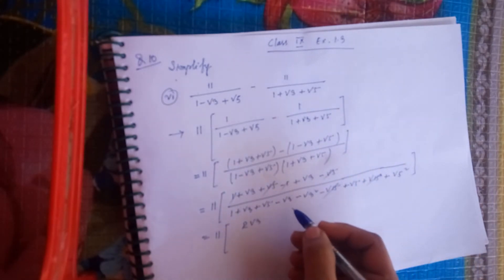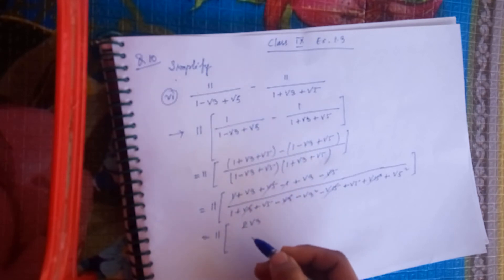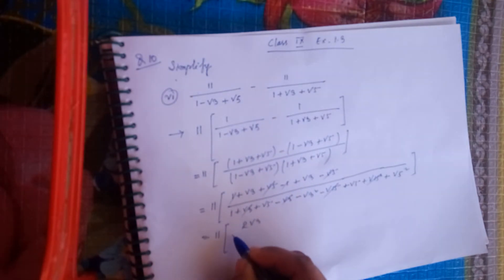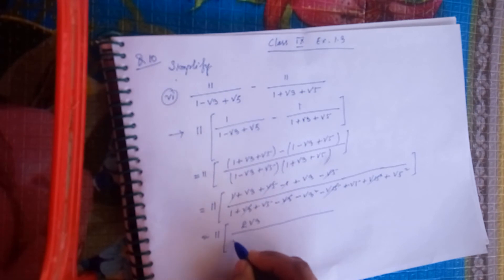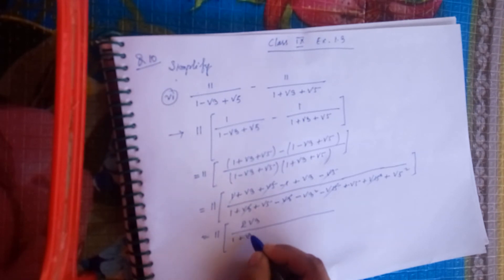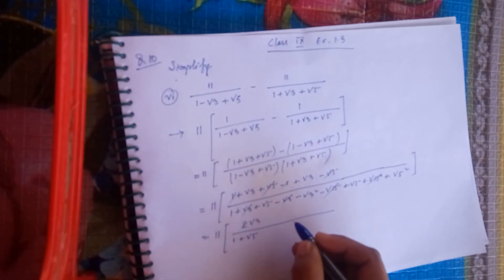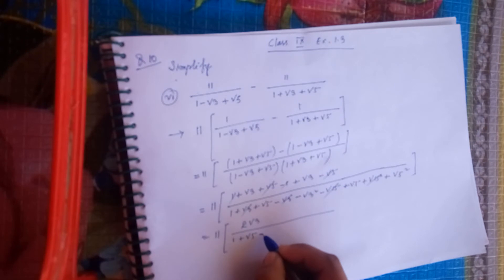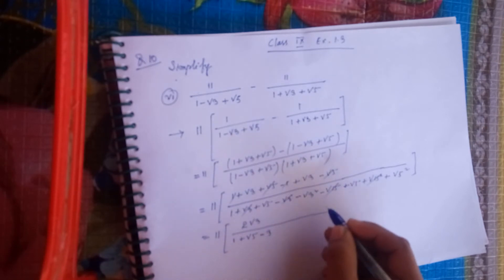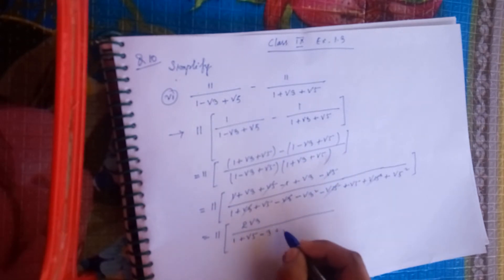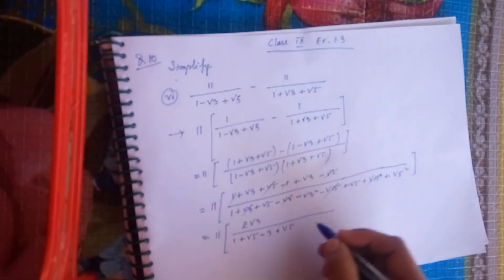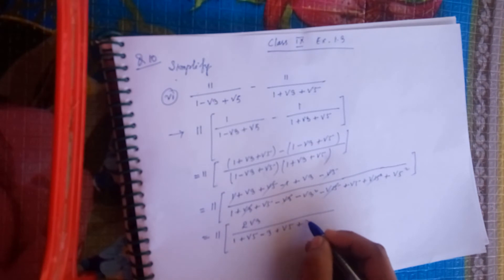After simplification, the numerator becomes 1 plus root 5, and using the identity we get: minus 3 plus root 5 plus 5.